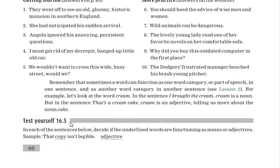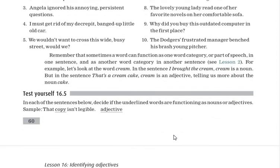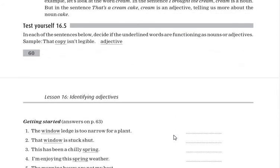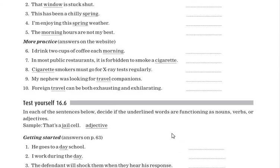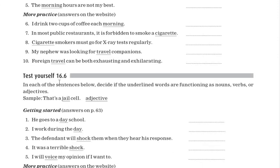Exercise 16.5 asks you to decide, for each underlined word in the sentences, whether it is functioning as a noun or an adjective. This is an important exercise. Sometimes the same word can be used as an adjective or as a noun depending on context, so read the whole sentence to understand how it is being used.